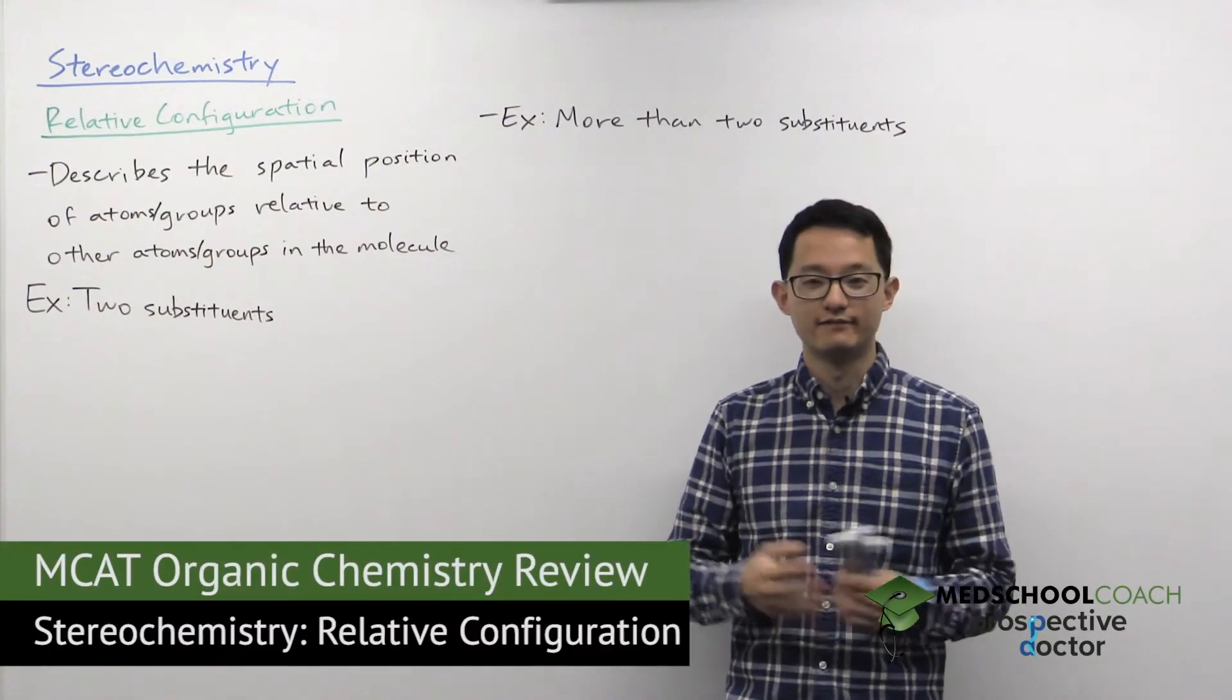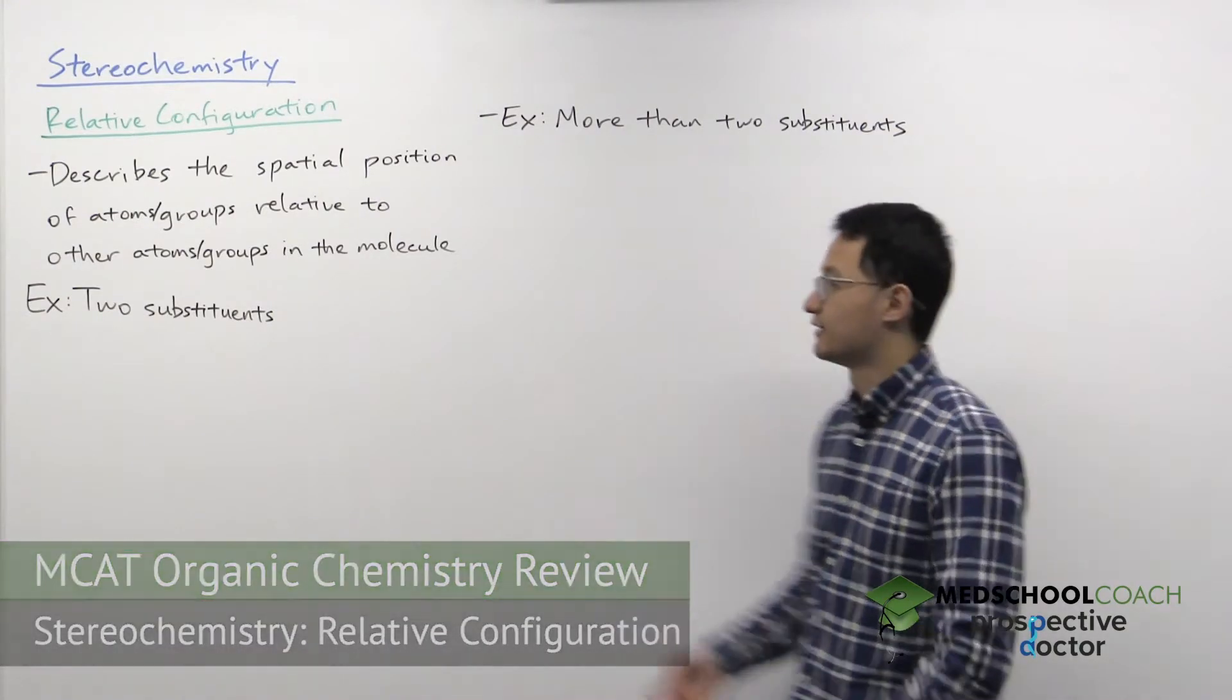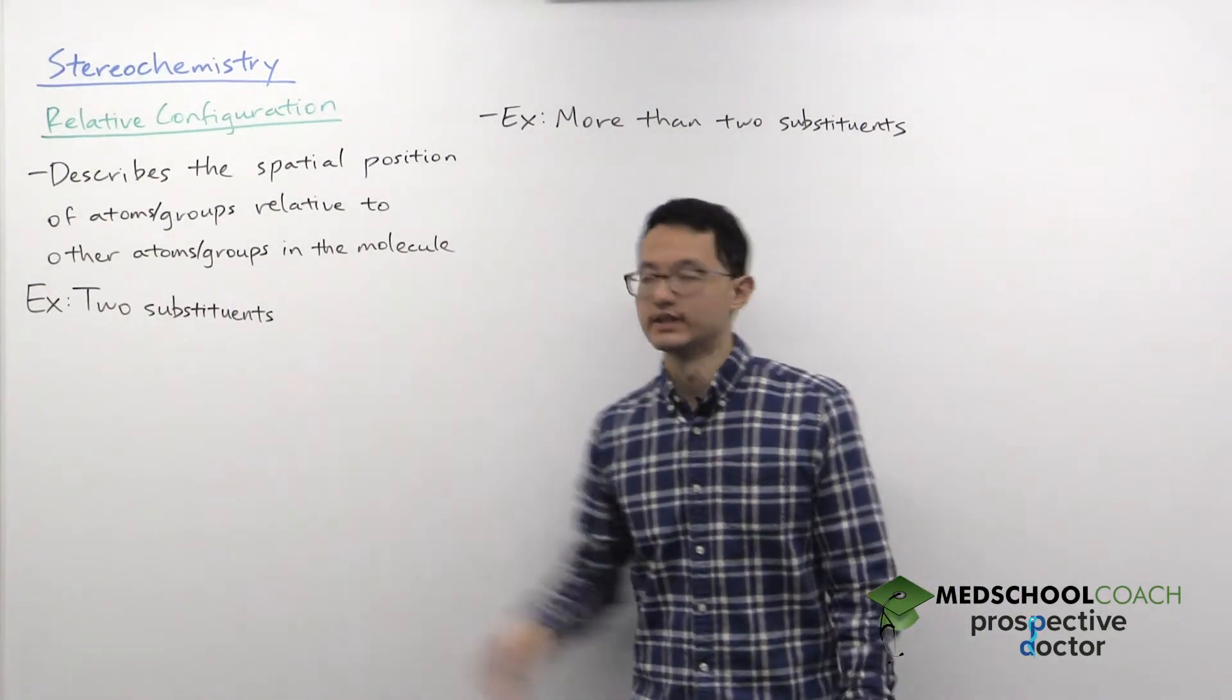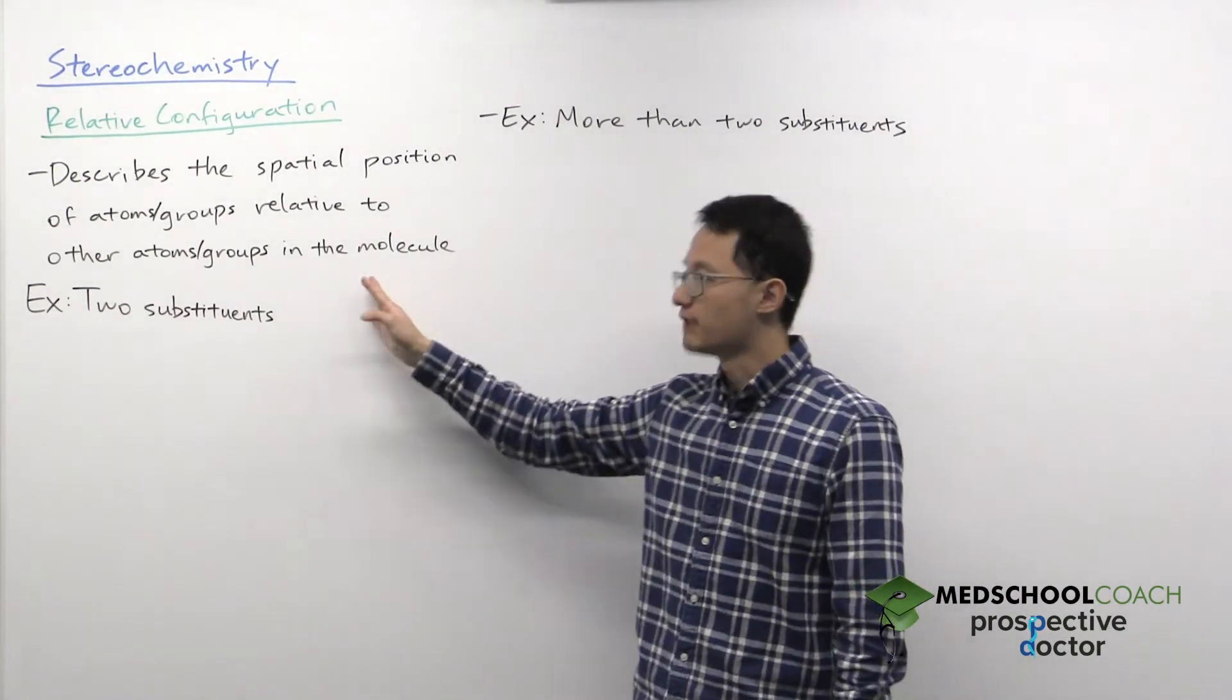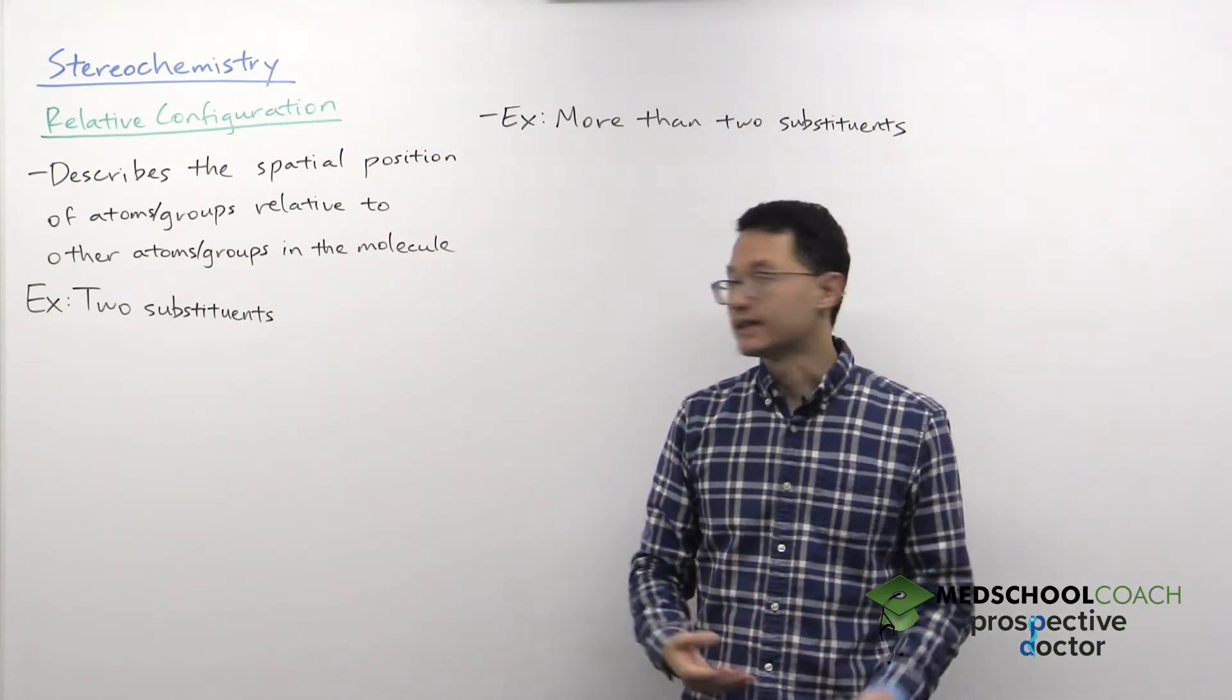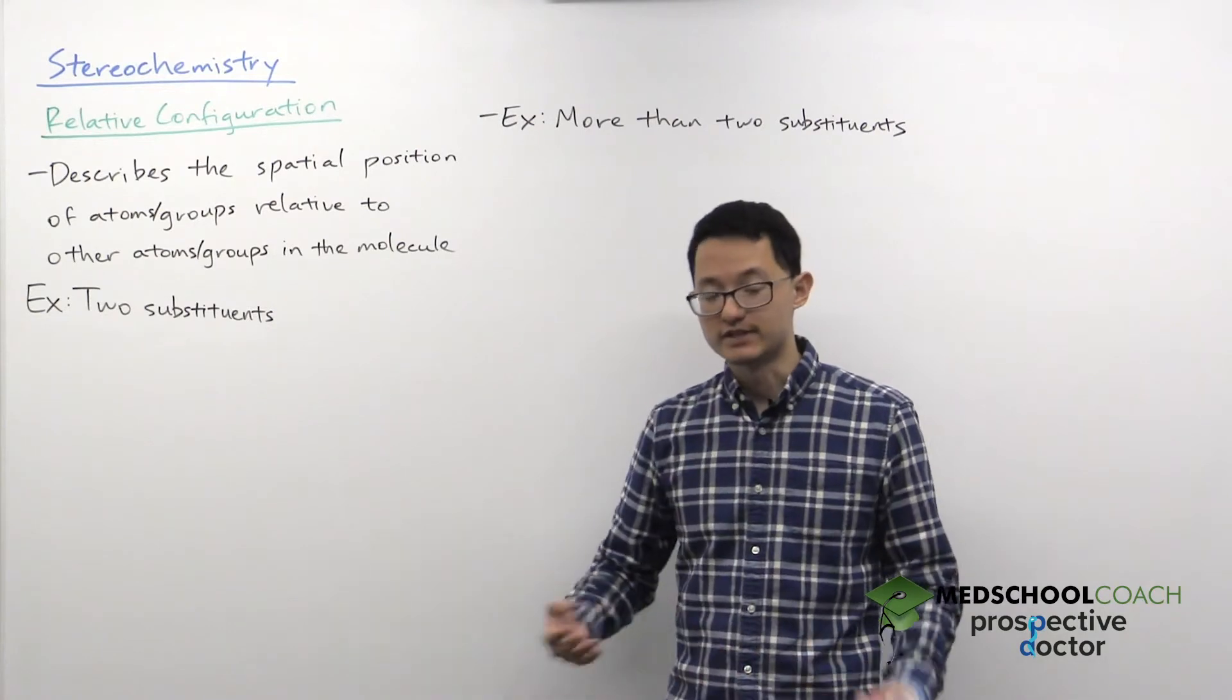All right, in this video we're going to go over relative configuration. Relative configuration is a way for us to describe the spatial position of atoms or groups relative to other atoms or groups in the molecule. And the best way to understand this is just by taking a look at a few examples.